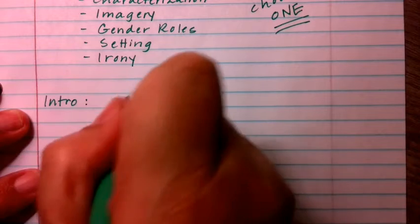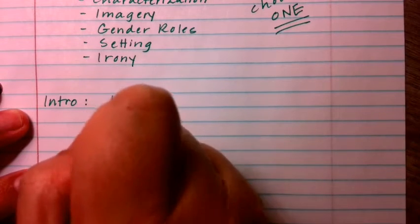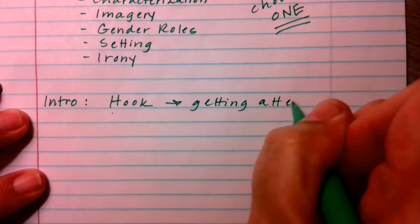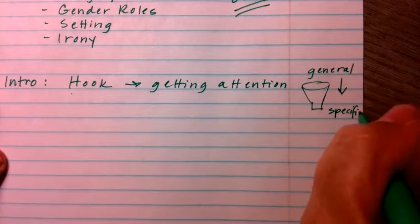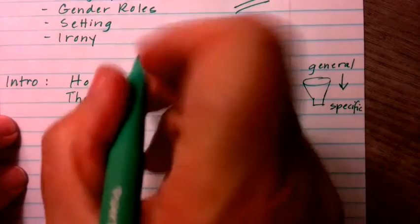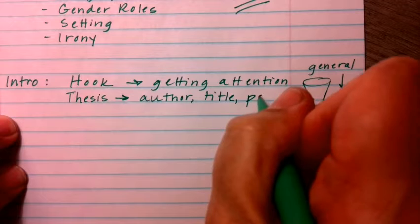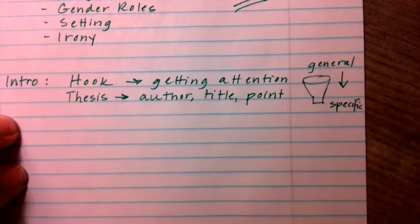The first thing you need to do is think about your intro. In your intro you need to have a hook — this is getting your audience's attention. Remember we talked about how it's like a funnel: you start broad at the top where it's general, and then you move down to the specific. The specific is going to be your thesis. In your thesis you want to include the author, the title, and the point that you're making.